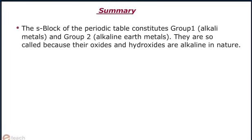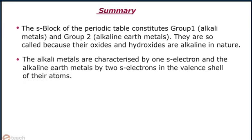The S block of the periodic table constitutes group 1, alkali metals, and group 2, alkaline earth metals. They are also called so because their oxides and hydroxides are alkaline in nature. The alkali metals are characterized by 1s electron and the alkaline earth metals by 2s electrons in the valence shell of their atoms.